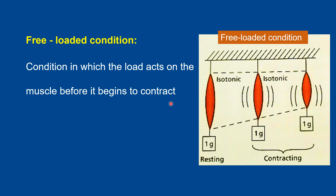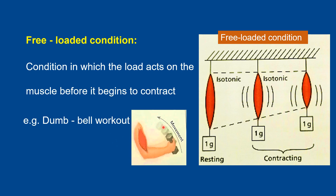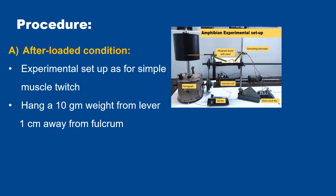Free-loaded condition is when the load acts on the muscle before it begins to contract, i.e., at rest. If you hang a weight on the muscle, before contraction the load is already stretching the muscle at rest — this is free-loaded condition. For example, in a dumbbell workout, we already have the load in hand, already stressed with this weight, and then we start contracting our elbow.